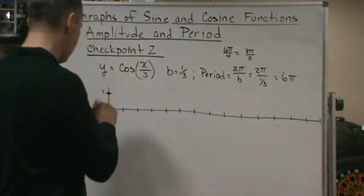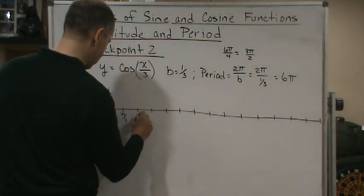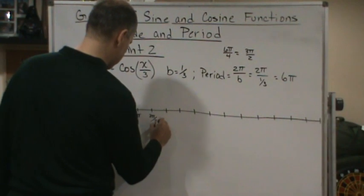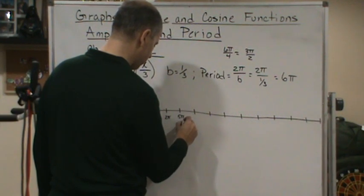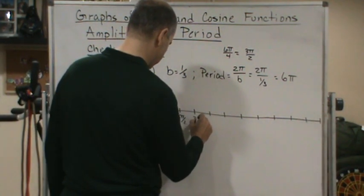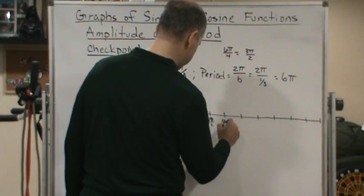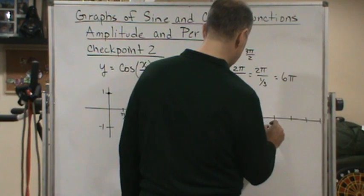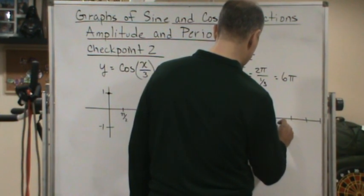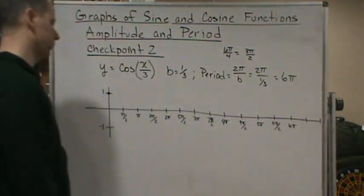So we got π over two, π, 3π over two, 2π, 5π over two, 3π, 7π over two, 4π, 9π over two, 5π, and we've got 11π over two and 6π. Okay cool, so we did it.